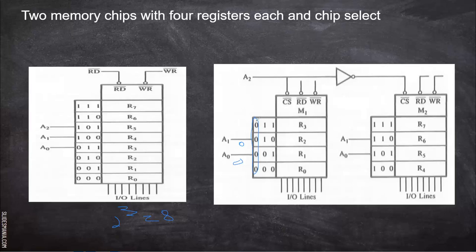A two is the third line. When A two is zero, the first chip is selected — this memory is selected. When A two is one, then the second chip will be selected. So within that, you have the combination. If this is zero-zero, register zero is selected. If this is zero and one, register one is selected. If this is one and zero, register two or register five is selected.